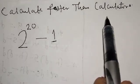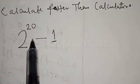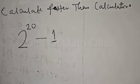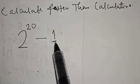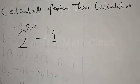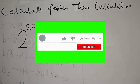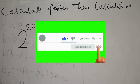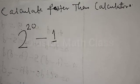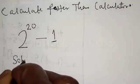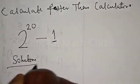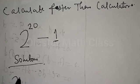Calculate faster than a calculator: 2 raised to power 20 minus 1. Hi everyone, welcome to my class. In this class we want to look at how we can easily calculate 2 raised to power 20 minus 1 without using a calculator. This is going to be done in one minute. But before we proceed, please don't forget to like, share, comment and subscribe. Solution: we have 2 raised to power 20 minus 1.